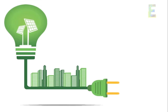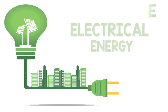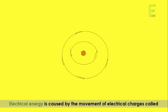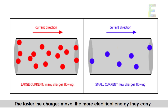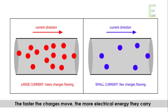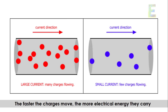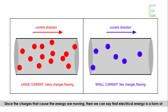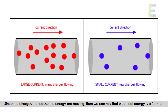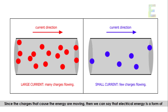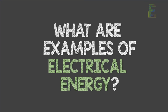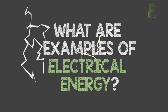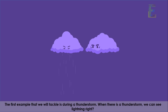Moving on, we have electrical energy. Electrical energy is caused by the movement of electrical charges called electrons. The faster the charges move, the more electrical energy they carry. Since the charges that cause the energy are moving, electrical energy is a form of kinetic energy.